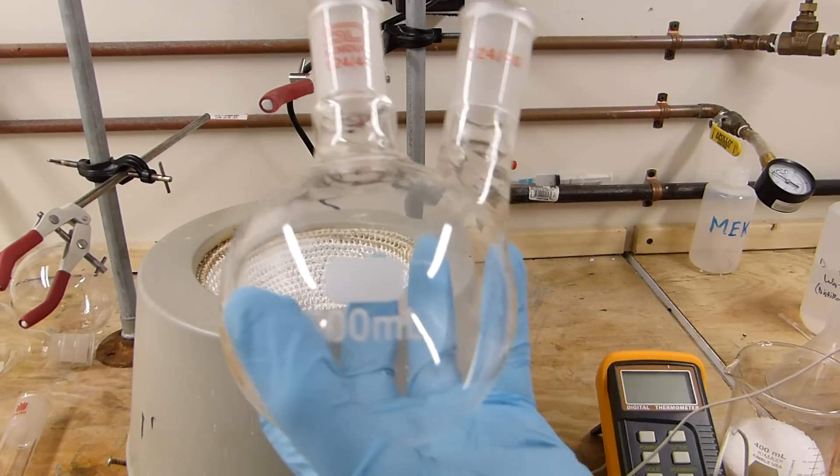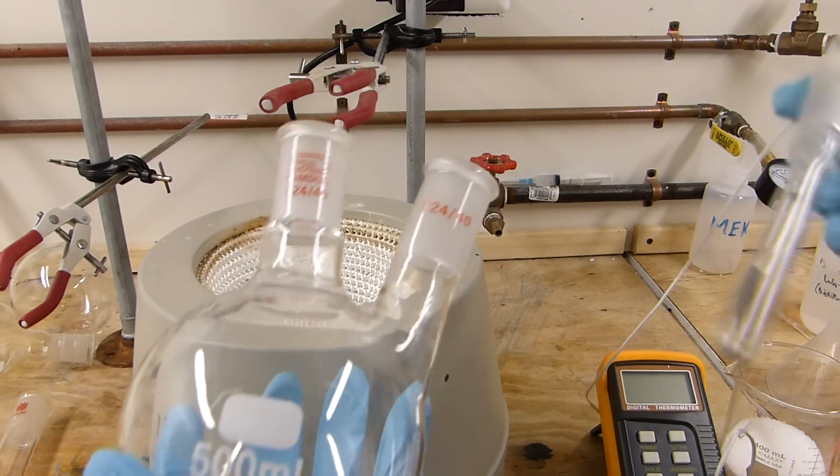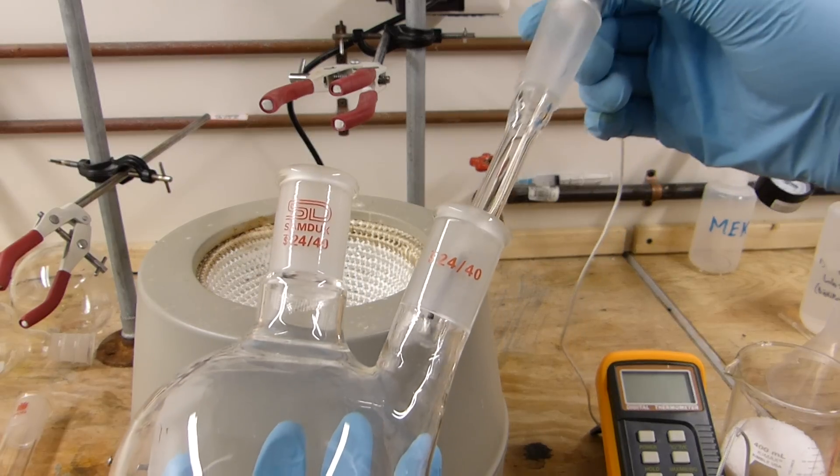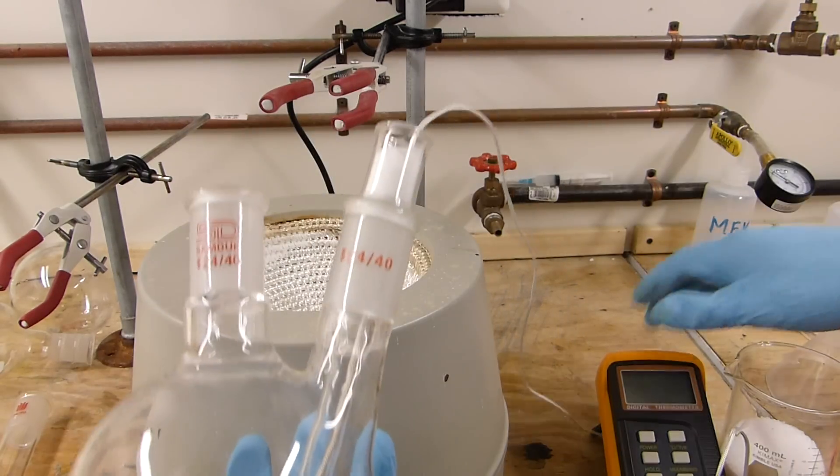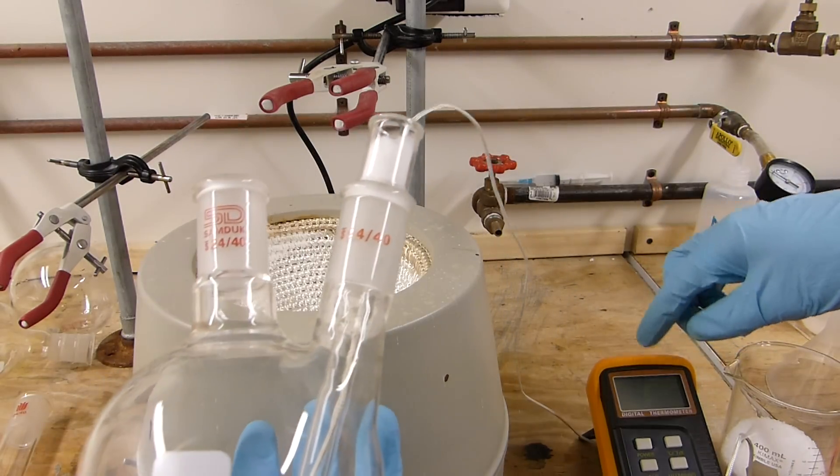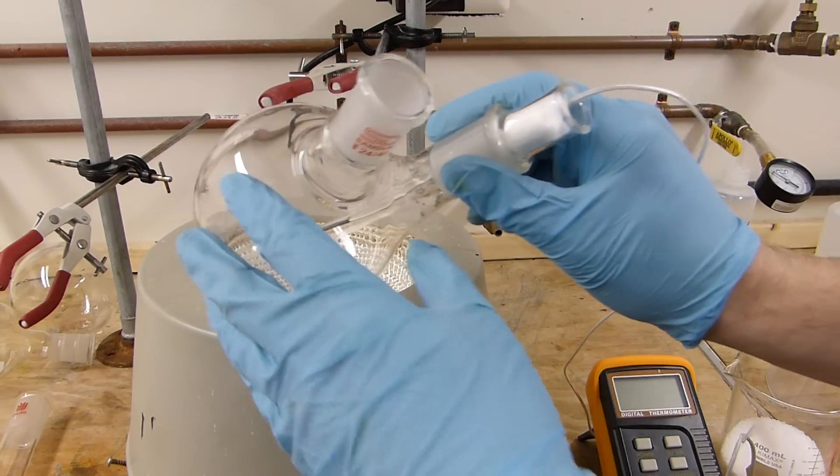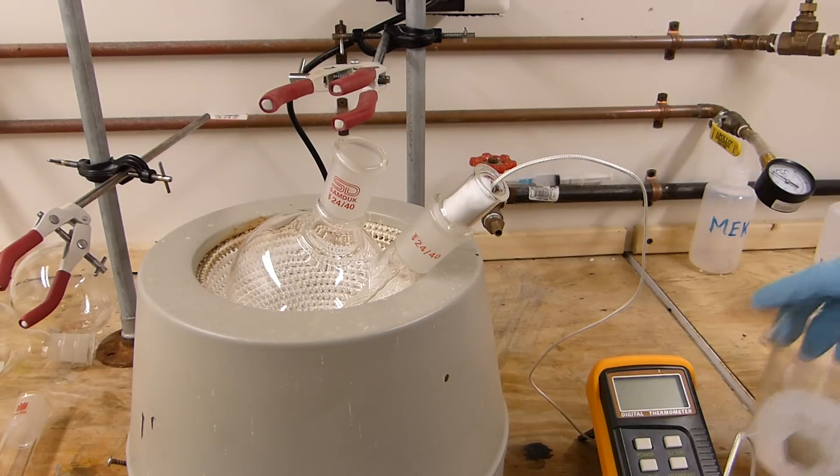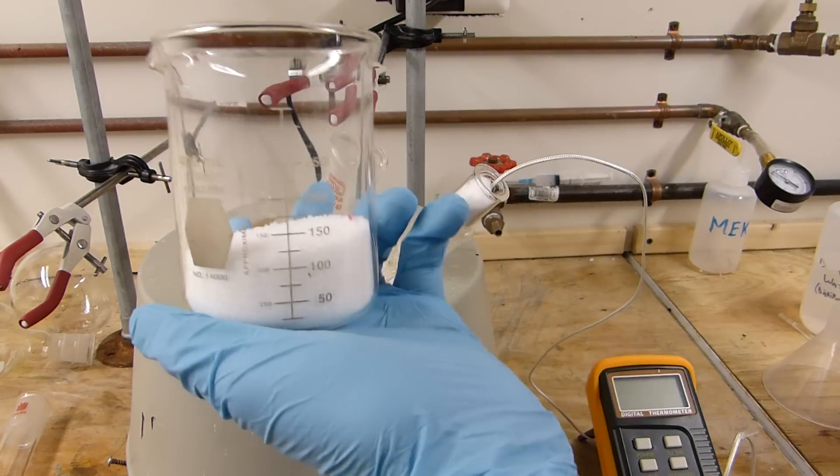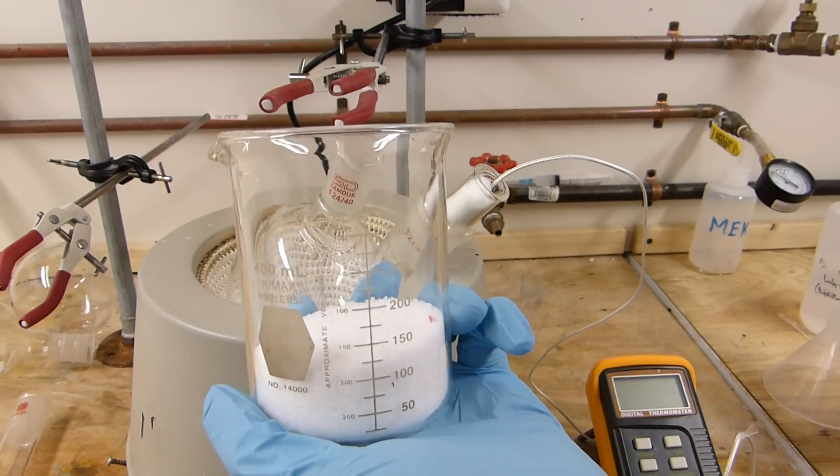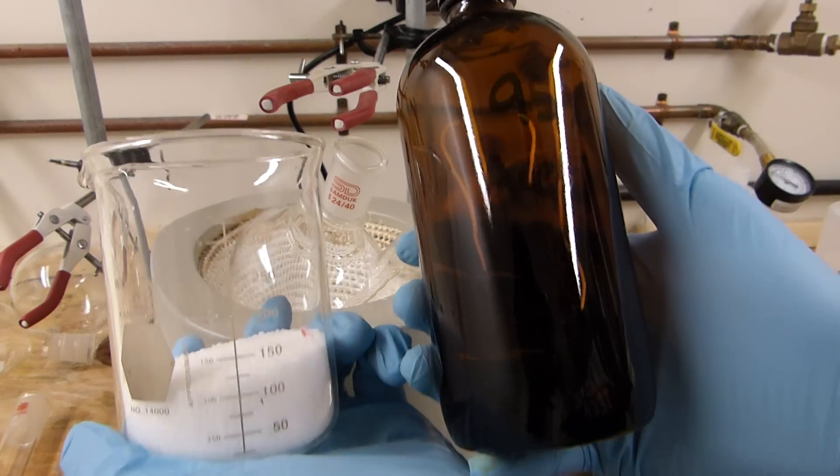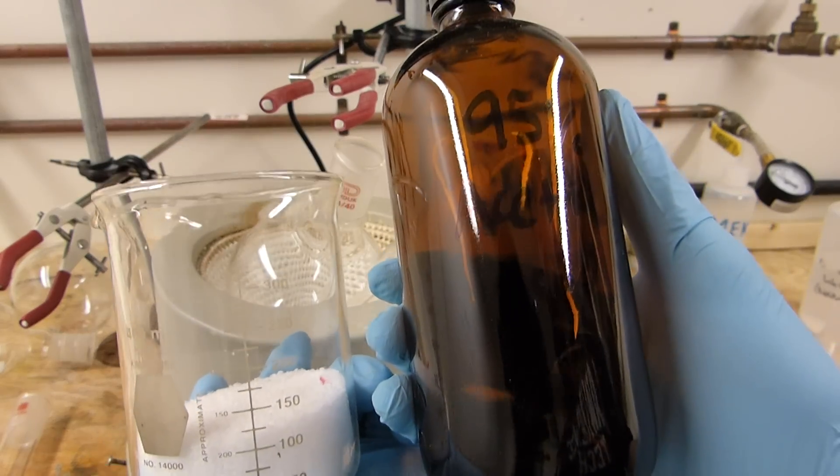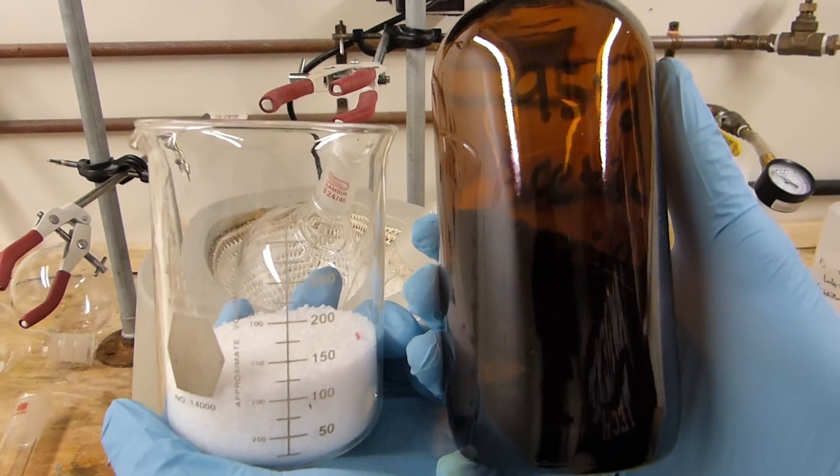I'll start with a 500 milliliter two-neck round bottom flask to which I'll add a thermometer well complete with a type K thermocouple. I like the thermocouples over the thermometers because they're easy to read from a distance using this thermocouple reader here. This will go into a heating mantle and then to that flask I will add equal weights of dry urea and glacial acetic acid. I'm gonna add a little more acetic acid because this is the glacial acetic that was made in a previous video and it's only roughly 95 percent.